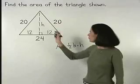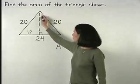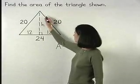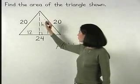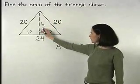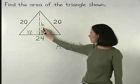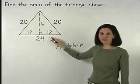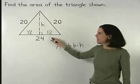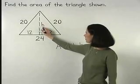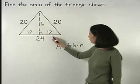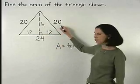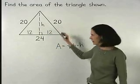Now, if we use the right triangle on the right side of the figure, we can find the value of h using the Pythagorean theorem. And we have h squared plus 12 squared equals 20 squared.